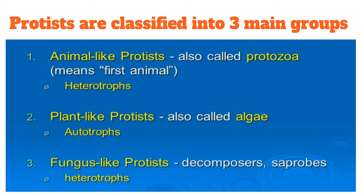Almost all protozoa are heterotrophic. The meaning of protozoa is 'first animal' — proto means first, zoa means something related to animal. The second category is plant-like protists, called algae. They have similarity towards plants and almost all of them have chlorophyll pigment and can do photosynthesis, so almost all are autotrophic. The third category is fungus-like protists, which are mostly saprophytes and decomposers — also heterotrophs that cannot prepare their own food.